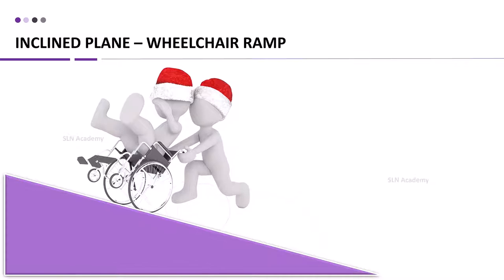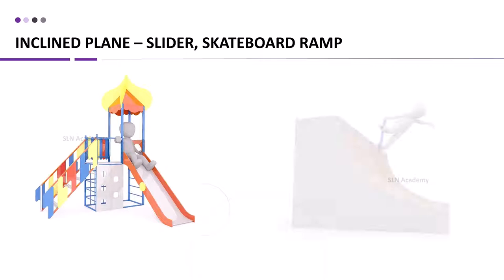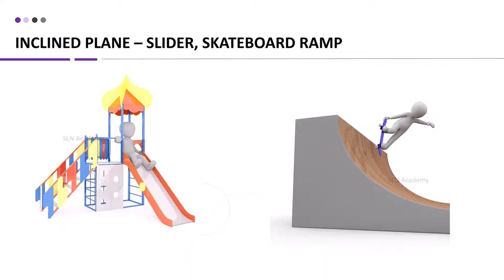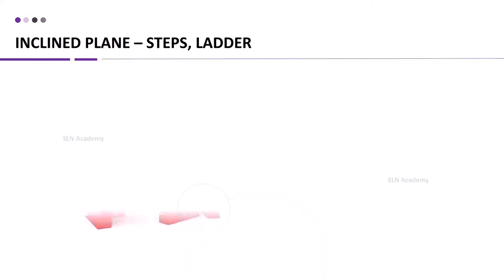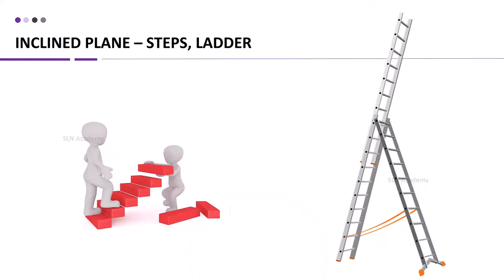Another example is wheelchair ramp. Moving an object up an inclined plane requires less force than lifting it straight up. Escalators and slanted conveyor belts are also forms of inclined plane. Inclined planes are also used as entertainment for people to slide down in a controlled way. In playground slides, water slides, ski slopes, and skateboard parks. Stairs and ladders are also examples of inclined plane. Inclined planes have been used by people since prehistoric times to move heavy objects.